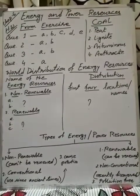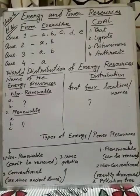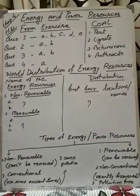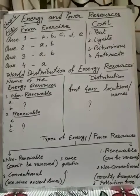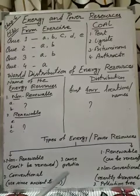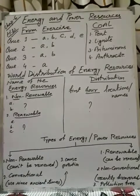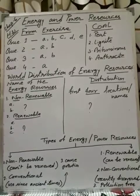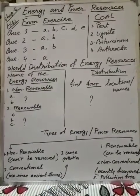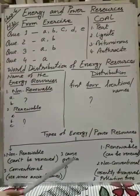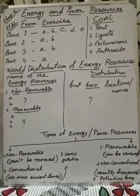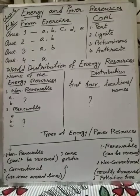Examples of renewable: solar energy, wind energy, hydropower, hydroelectricity — these are examples of renewable resources. One more characteristic: in case of non-renewable resources, they are the cause of pollution because coal and petroleum contain carbon. Renewable resources like water and wind are free from pollution — pollution free. These are the key characteristics of these two types of resources.